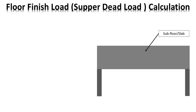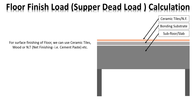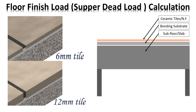If you consider this is a slab — a soffit floor or a slab — on that slab we will apply a bonding substrate, which can be constructed by mortar or other materials. Over it we can also use ceramic tiles or net finishing. Net finishing can be like a simple cement paste.